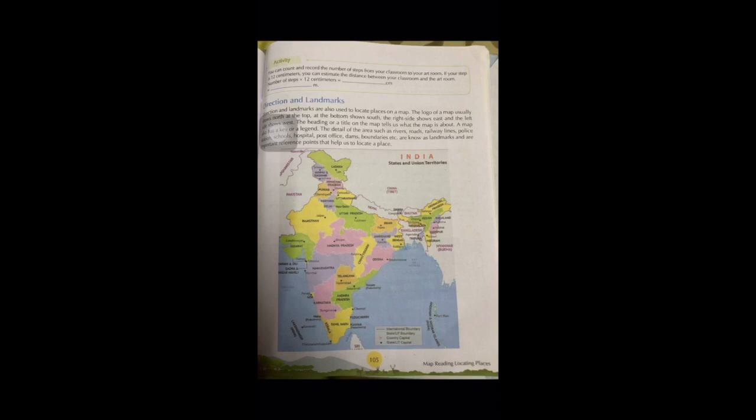The heading or title of the map tells us what the map is about. A map also has a key or a legend. The details of the area such as rivers, roads, railway lines, police stations, schools, hospitals, post offices, dams, boundaries—known as landmarks—are important different points that help us locate a place.